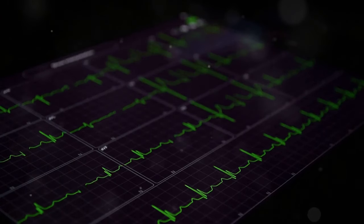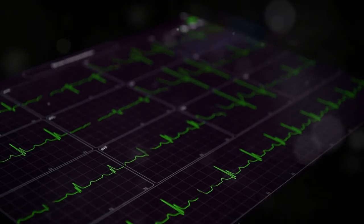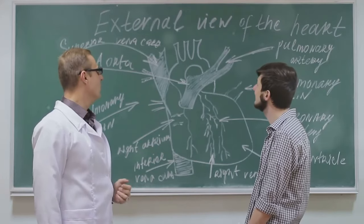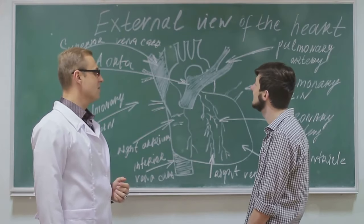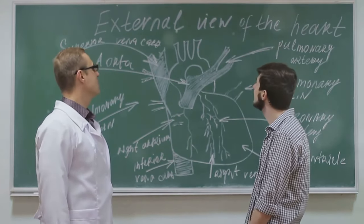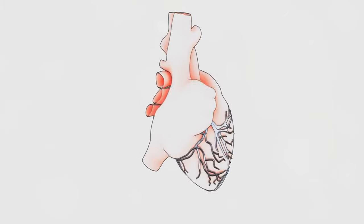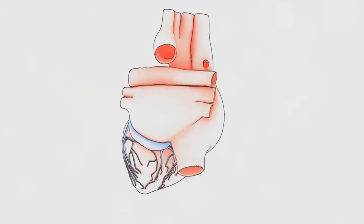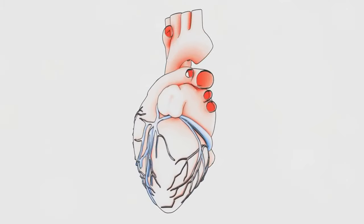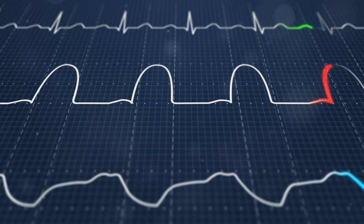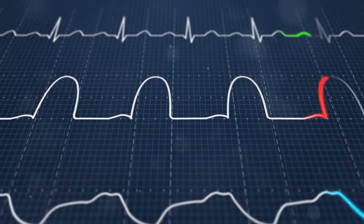The first heart sound (the 'lub') occurs during systole, produced by the closing of the atrioventricular valves. The second heart sound (the 'dub') occurs during diastole, signaling the closure of the semilunar valves. The ECG provides a visual representation of the cardiac cycle, with the P wave corresponding to atrial activation.